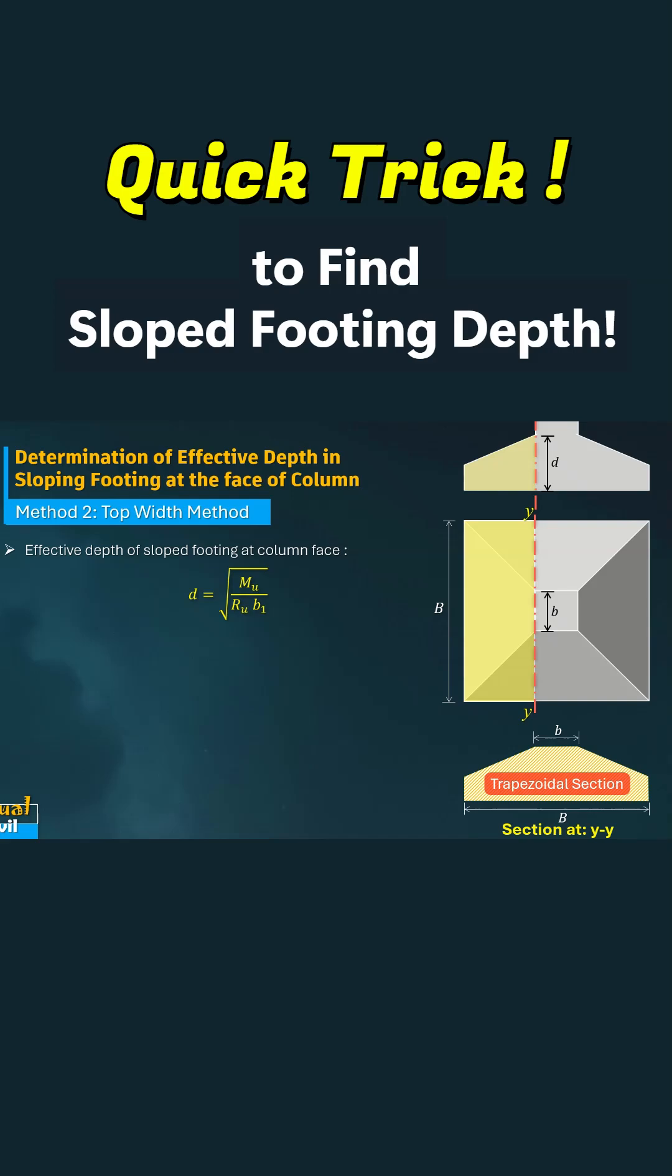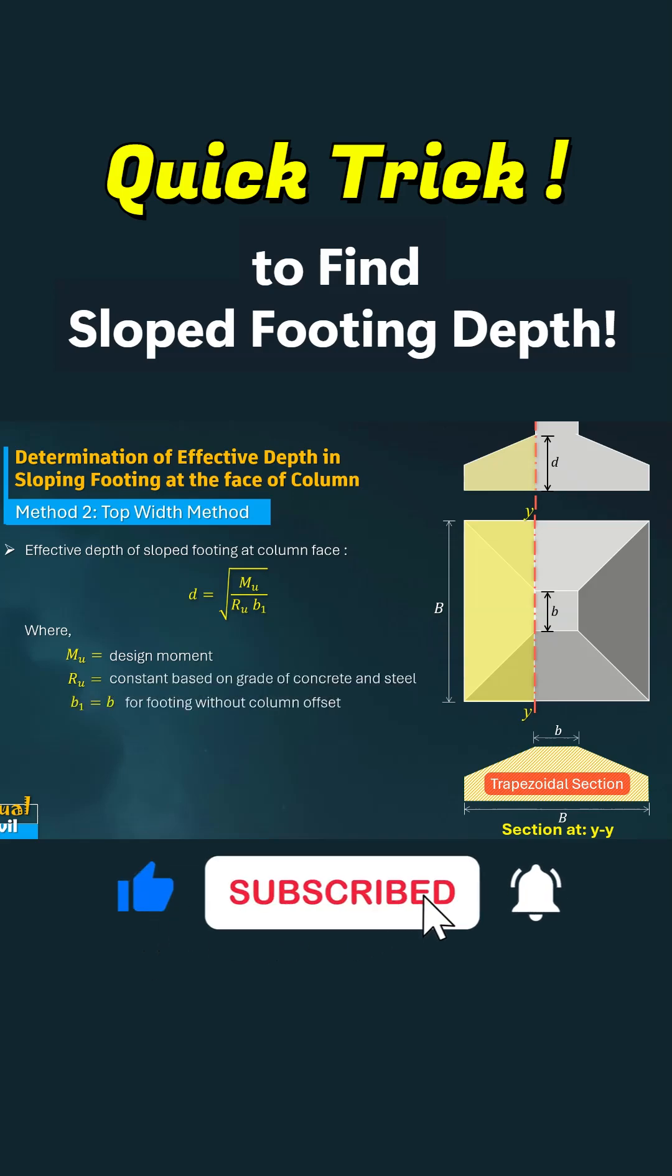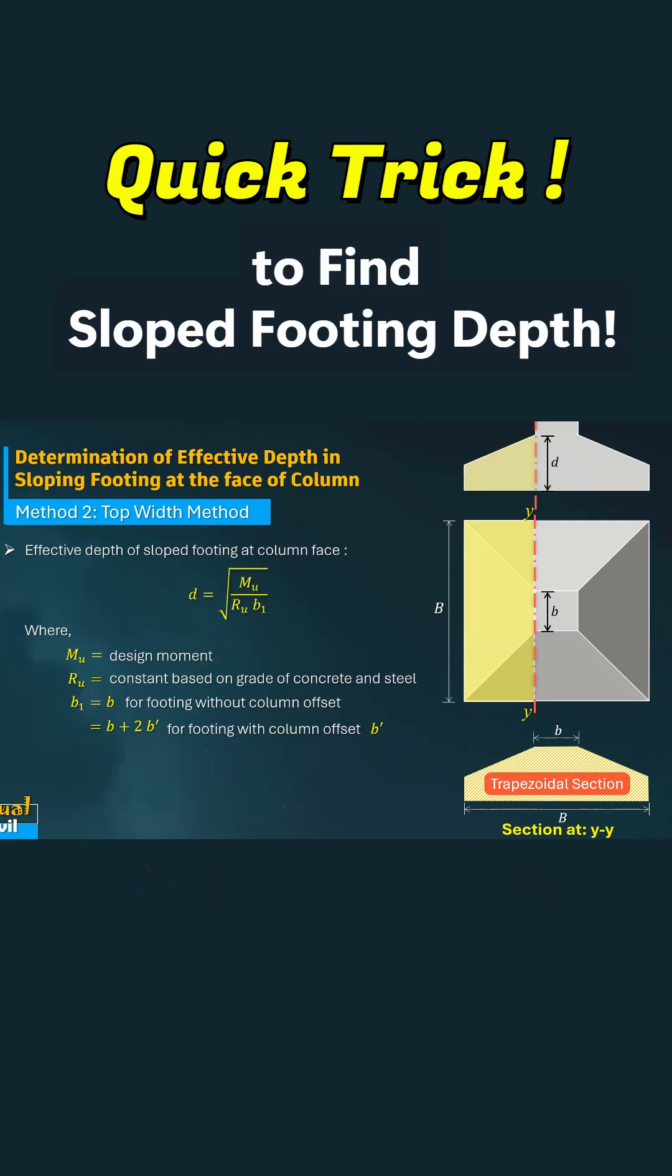Now, this top width depends on whether there is a column offset. If there is no offset, the top width is simply equal to the column width. But if the column is offset by a distance B dash, the top width becomes the column width plus twice the offset, accounting for the extended spread of the load.